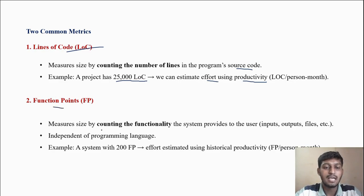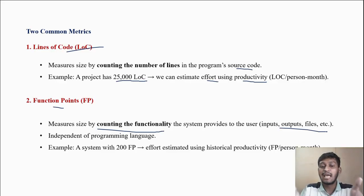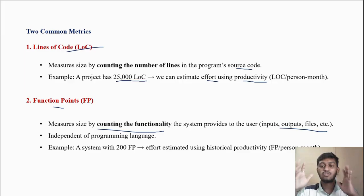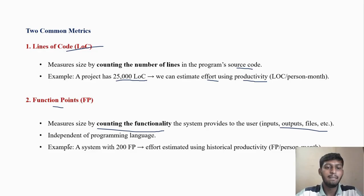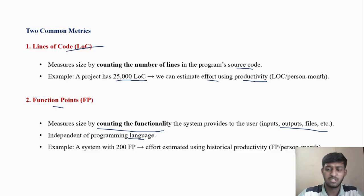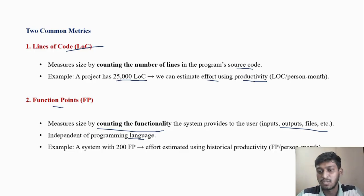Function points measure size by counting the functionality of the system delivered to the user — input, output, files, etc. Input is one functionality, output is another, saving a file is a third, and database interaction is another. On the basis of these functionalities we can find cost, effort, and productivity. Importantly, function points are independent of programming language, unlike line of code which is language dependent.